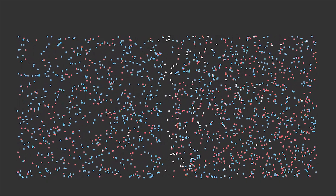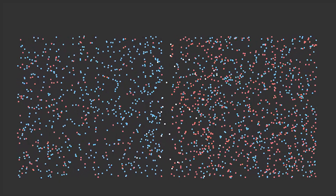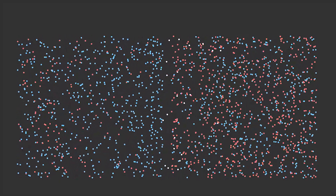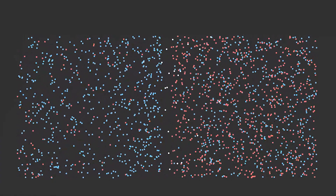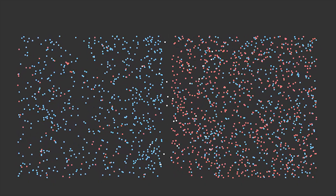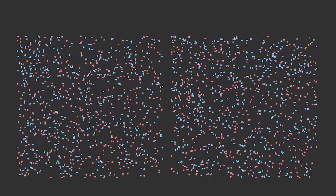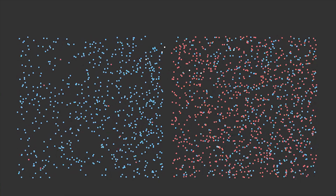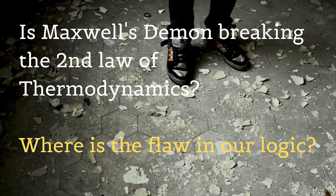Slowly, all the high-speed particles will be on the right side and all the low-speed particles will be on the left side. What is temperature? The higher the temperature of something, the faster its molecules are jiggling — that's what temperature actually is; it's an emergent property of matter. What has happened here is that this guy has taken a system that had no ability to do useful work and got some temperature differential out of it, which means you can now get useful work out of it. Isn't it breaking the second law of thermodynamics?